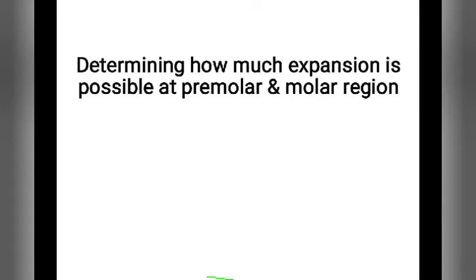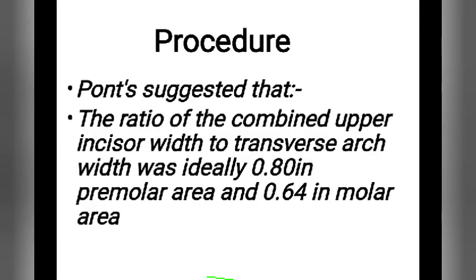Now, what is the procedure for Pont's analysis? Pont suggested that the ratio of the combined upper incisor width to transverse arch width was ideally 0.80 in premolar area and 0.64 in molar area.